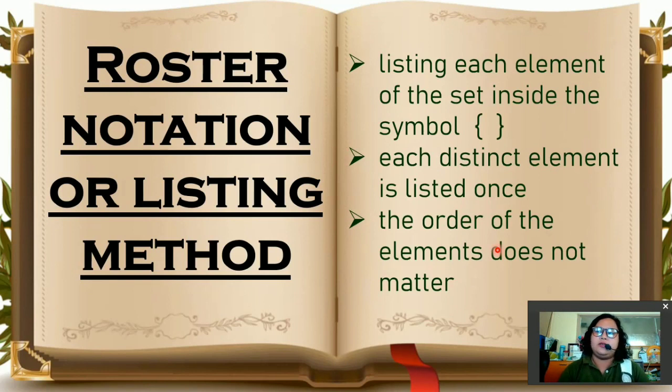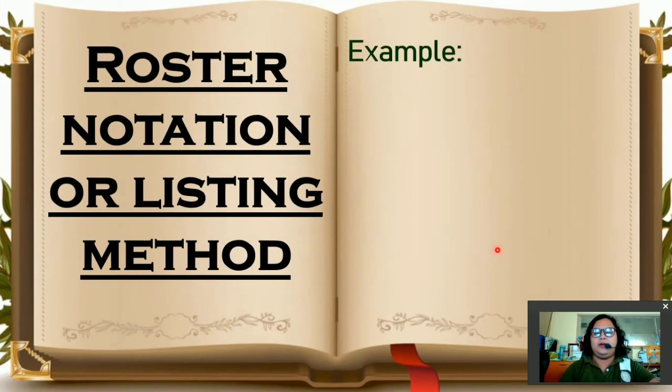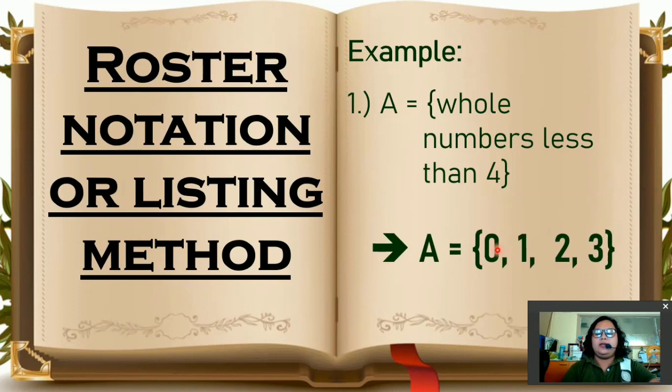Let me show you an example. So if we have set A equals whole numbers less than 4. So this is the descriptive notation. So how do you write the elements of the set? Or, you will list down the elements of the set. So it would be set A equals, the whole numbers that are less than 4 are 0, 1, 2, and 3.